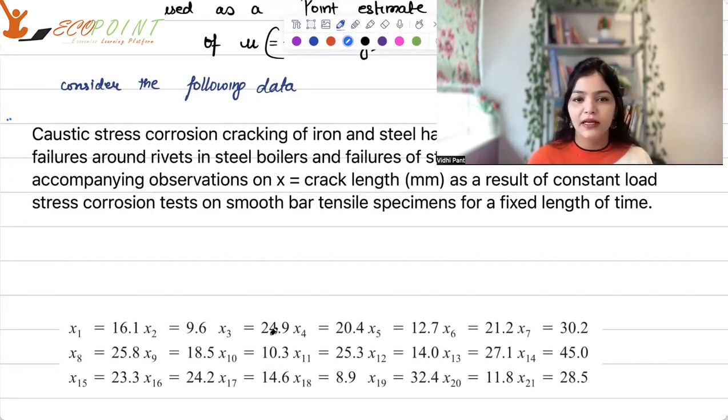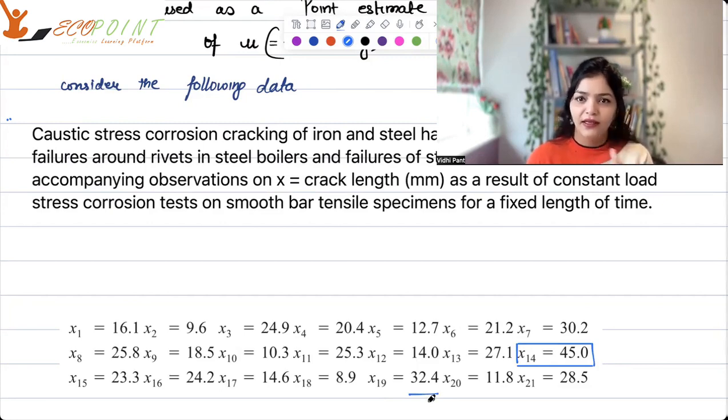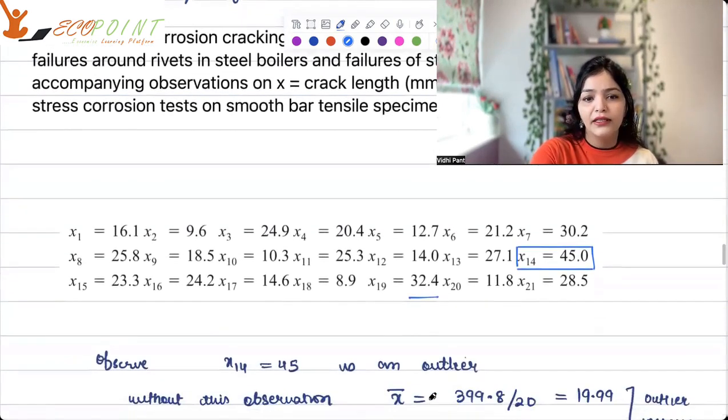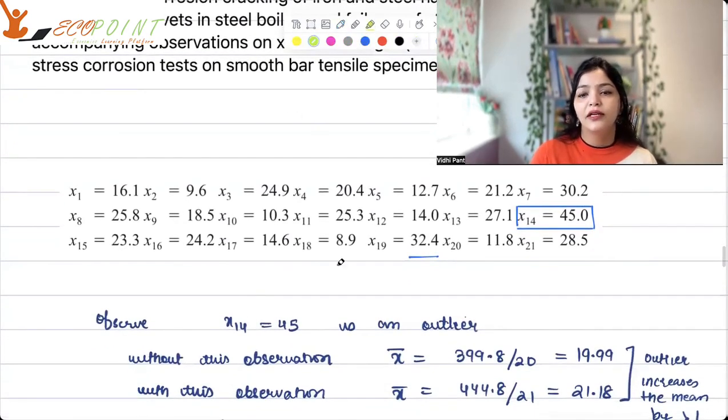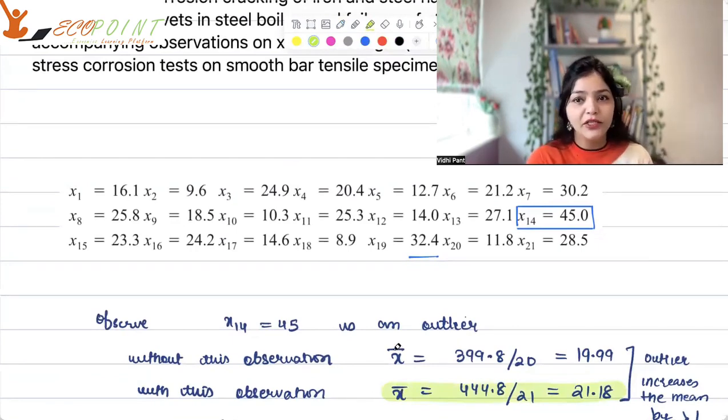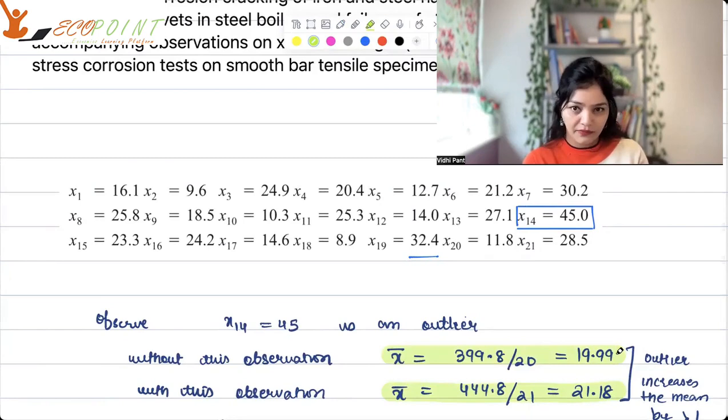Now, if you can see here, 16, 9, 24, 20, so on and so forth. If you can see that X14 is a value which is 45, which is way above what the other values are. One is 32, but otherwise you will see it's in 20s or you know in the tens. 45 is a big value. If you include 45 in the calculation of this mean, you will figure out that you are getting the mean as 21.18. If you take only 20 observations, these are 21 observations including 45. If you take 20 observations, you do not take that 45. Your mean is 19.99. So, you can see it's a little difference.